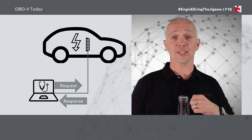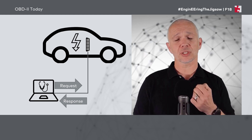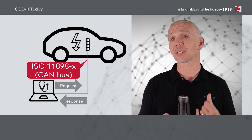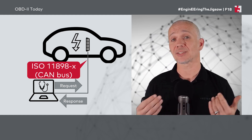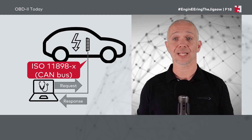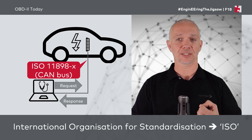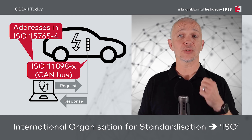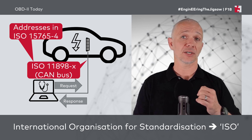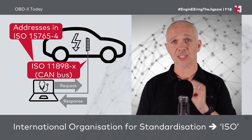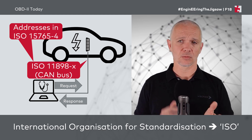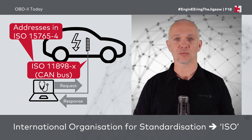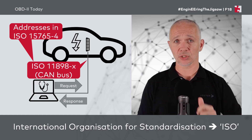Moving on a little bit, if we think about OBD2 today as it exists in vehicles, just a couple of things are slightly different. We now have ISO 11898, or the CAN bus, typically between our scan tool and the vehicle. We have CAN inside the vehicle, so we bring that CAN connection outside the vehicle to connect our scan tool to. This is ISO 11898 — ISO standing for International Organisation for Standardisation. Also the addresses to be used in OBD are standardised and specified in ISO 15765 part 4. So just know that today OBD is mostly done with CAN, although that is starting to change. Keep watching Engineering the Jigsaw to find out how.